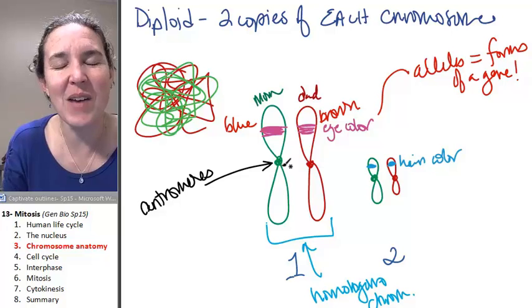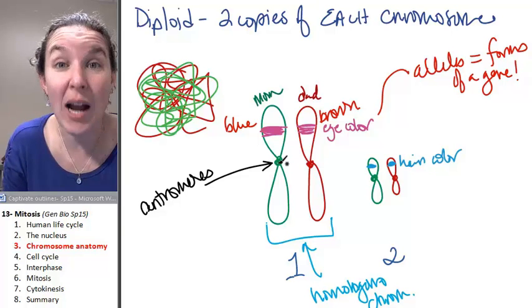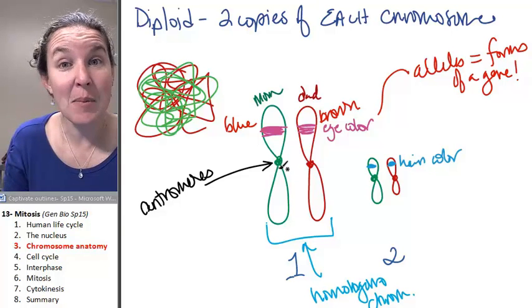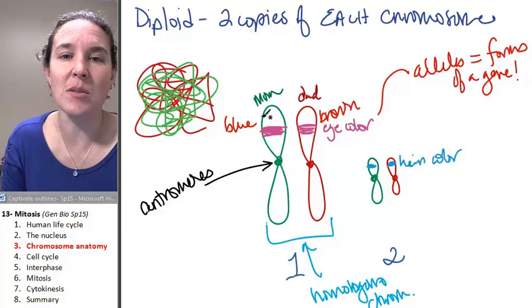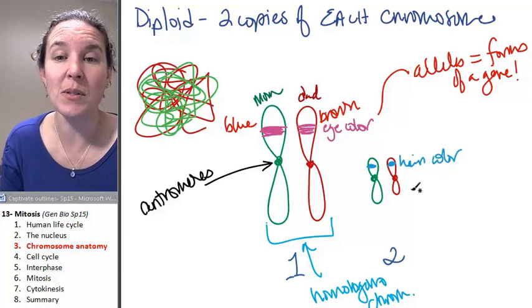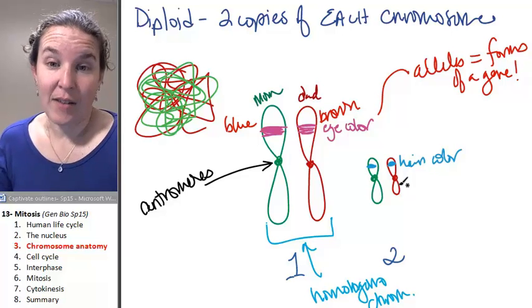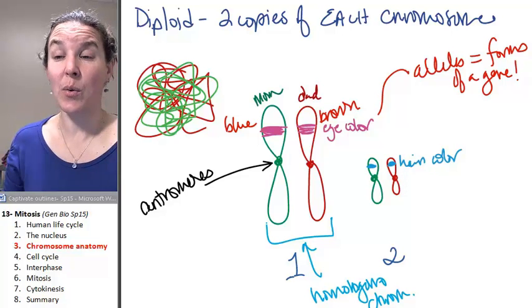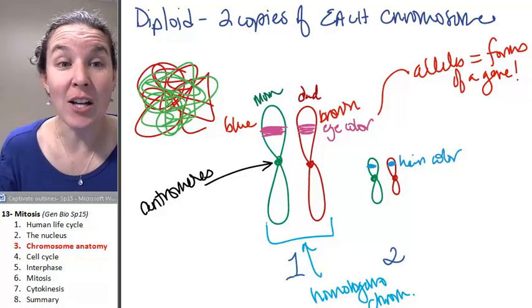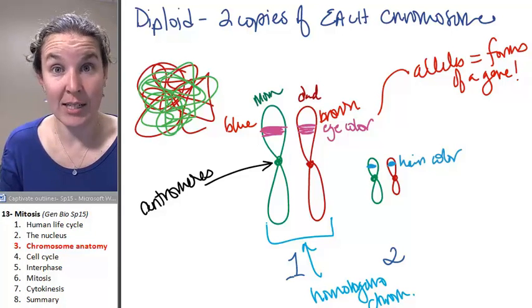But we kind of have to have a sense of like why do we even keep track of this stuff in mitosis and meiosis? Well, it matters because we're going to keep track of our chromosomes. We're also going to keep track of something else that happens.